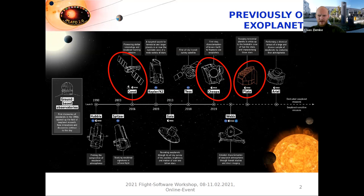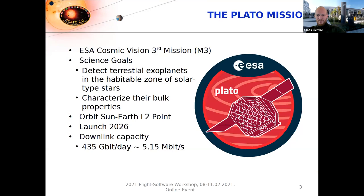The PLATO mission is the third medium mission of the ESA Cosmic Vision program. The science goal is to detect terrestrial exoplanets in the habitable zone of solar-type stars and characterize their bulk properties — basically, we want to find the twin of the Earth. It will orbit around the Sun-Earth Lagrangian point 2, launched in 2026. The downlink capacity will be roughly 435 gigabits per day, which equates to around 5.15 megabits per second. Please remember that number — it will become important later.